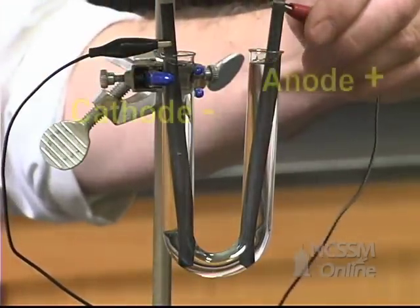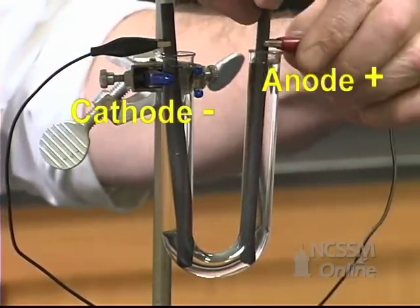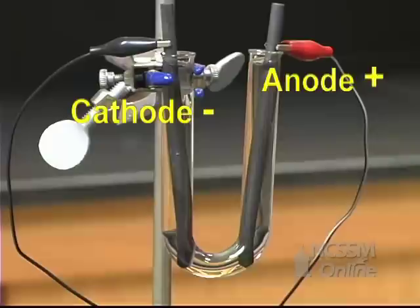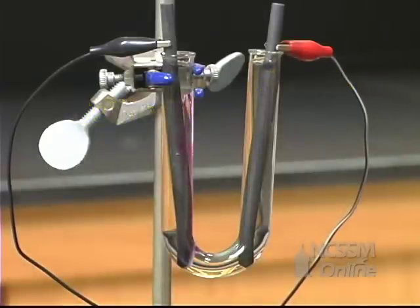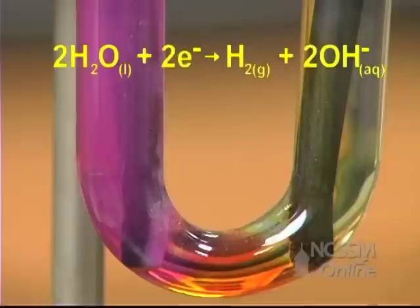At the cathode, the potassium ion is not easily reduced, so we reduce the water. As the water is reduced, we'll see hydrogen gas produced. The hydroxide ion produced will turn the phenolphthalein in the solution pink.